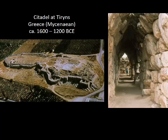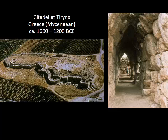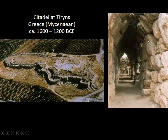Moving on to the Mycenaeans, here is a citadel to contrast with the palace at Knossos. It's similar in being a large rambling structure, but the key difference is the thick, heavy fortifications surrounding it. Why fortifications here and not at Knossos? Geography — they're on the Greek mainland, where people could come down from the north and attack. These are huge, heavy stones built in the corbeling process. The Mycenaeans were super adept at working with this corbeling process.